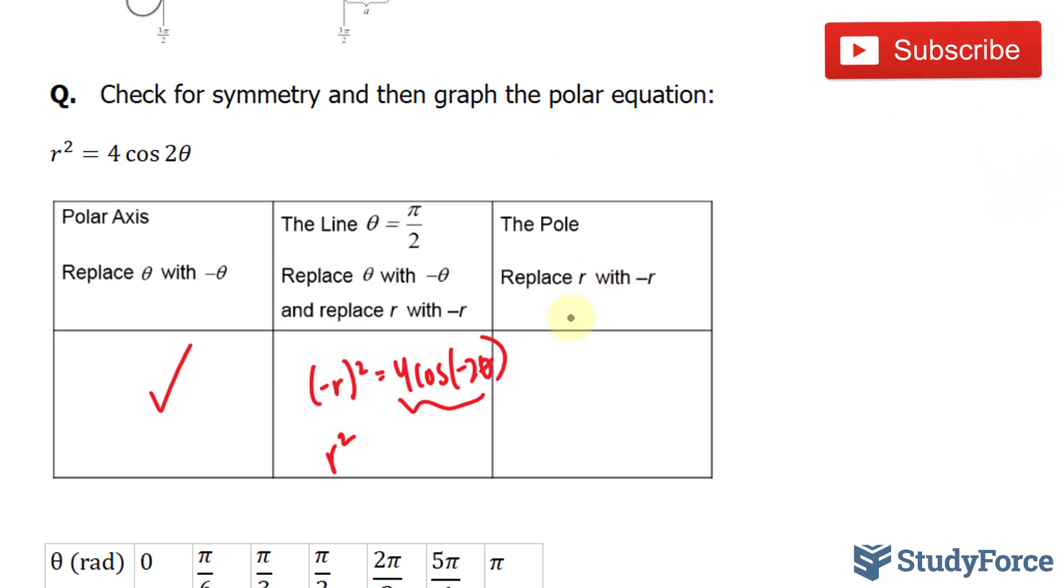Finally, replacing only r with negative r, negative r to the power of 2 will give you a positive r value, r squared. So it doesn't change for this either.